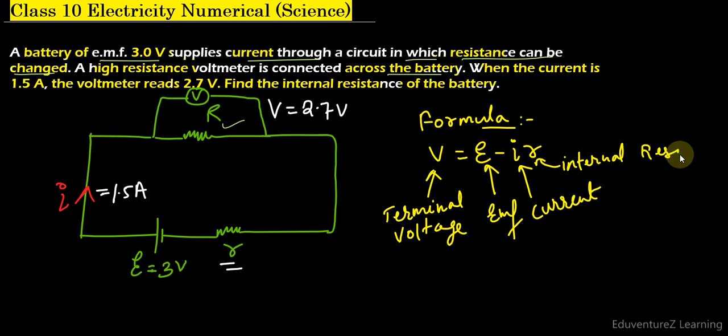Now we will put the values over here and we will get our answer. So the terminal voltage V means the reading of the voltmeter is 2.7 volts, equal to the emf is 3 minus current is 1.5.